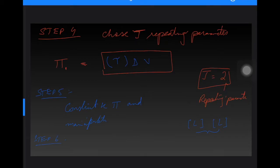Step five is to construct the k pi's. We construct pi number one, and if we have more pi's we construct and manipulate them accordingly. Step six is that once we have derived the formulas, we make a functional relationship — what pi one is a function of.